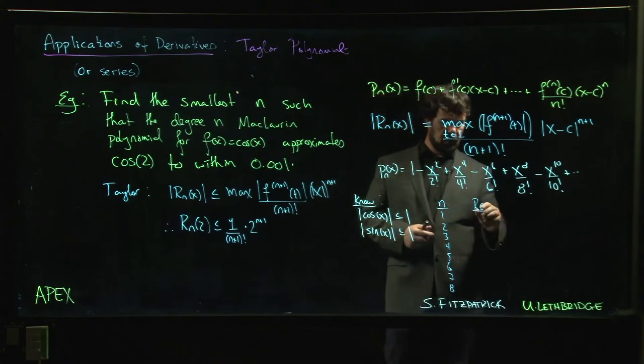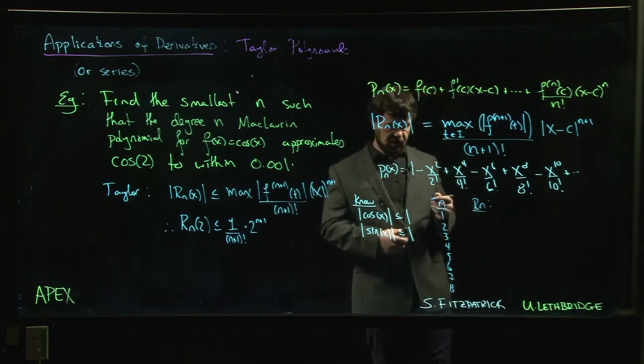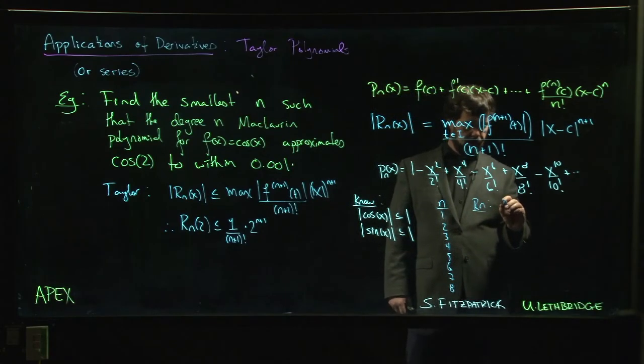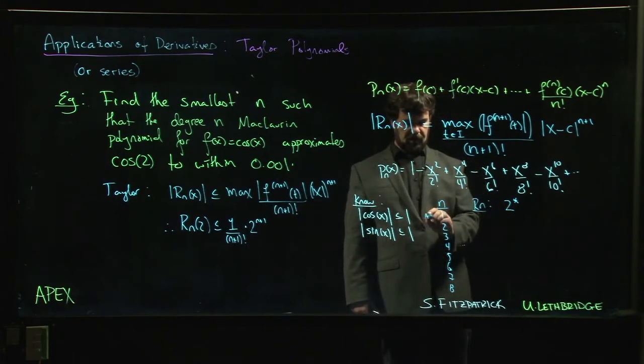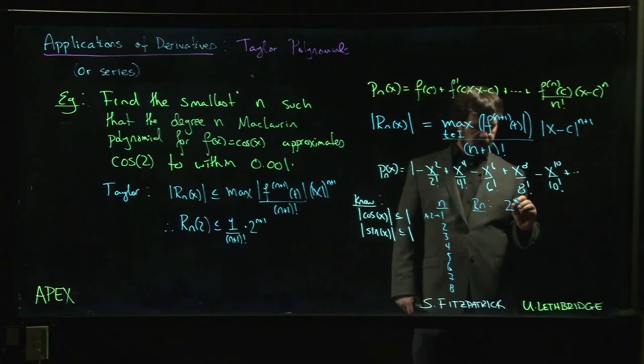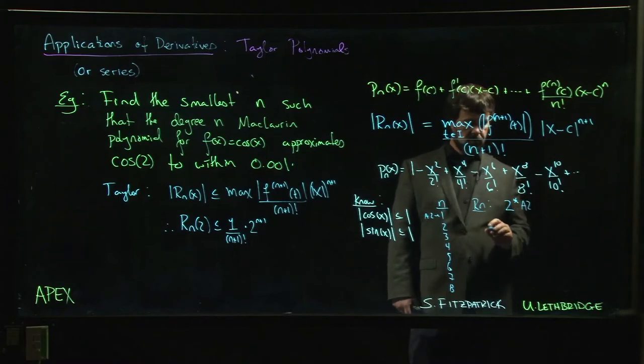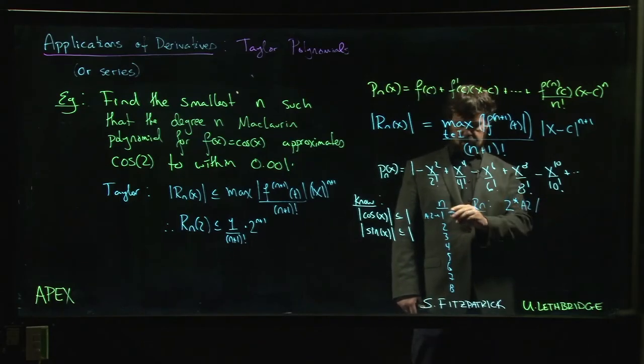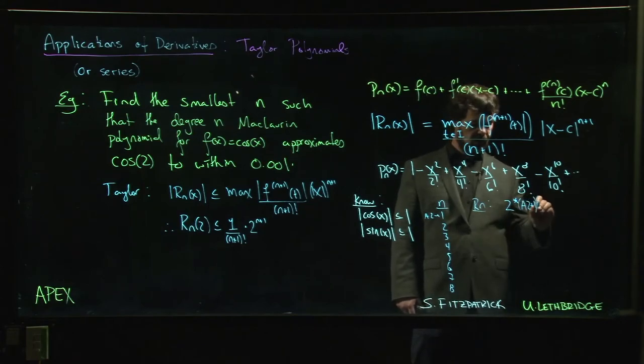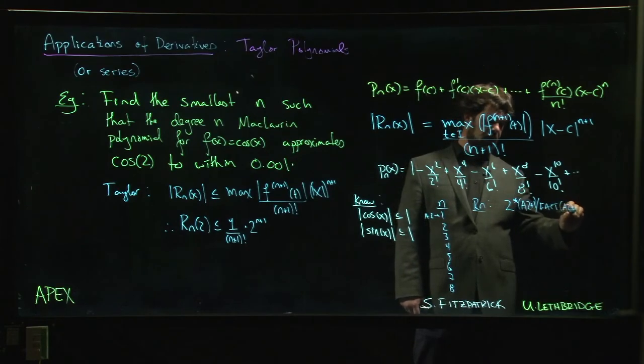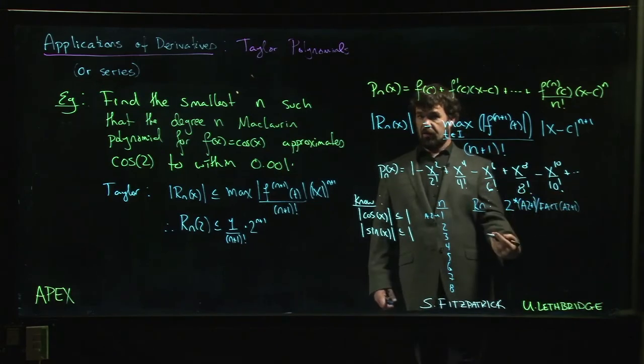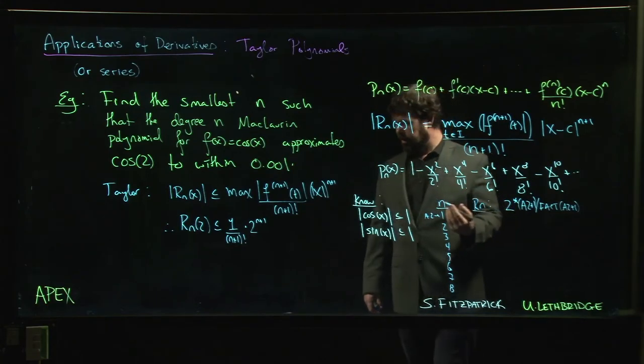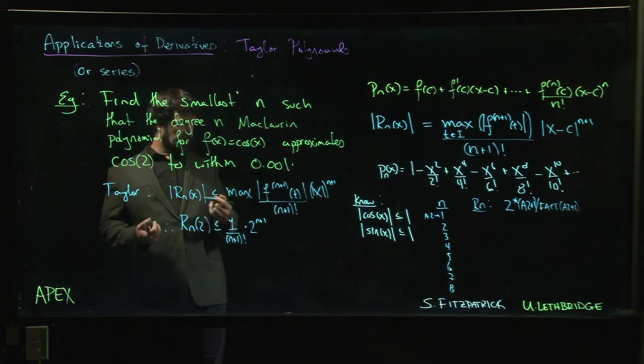All you do is you take one column and you label it N, and you have another column that you label R_N or error or something. And you just fill the values down. In fact, if you put one and you drag it, it will fill the rest in automatically on a decent spreadsheet. And then the R_N, you can program this into your spreadsheet. You say it's going to be 2 to the power of, so if this is in like cell A2, it's going to be 2 to the power of A2 plus 1 divided by factorial A2 plus 1.